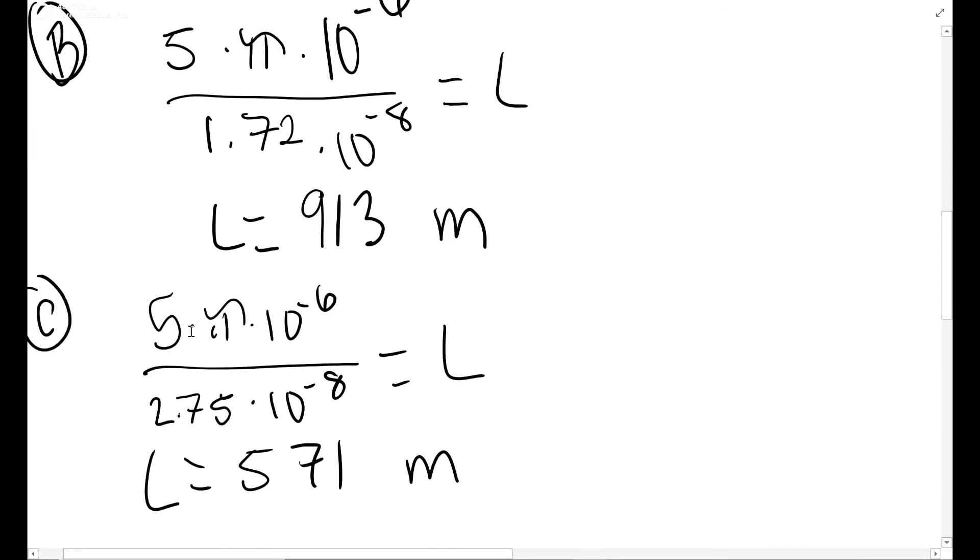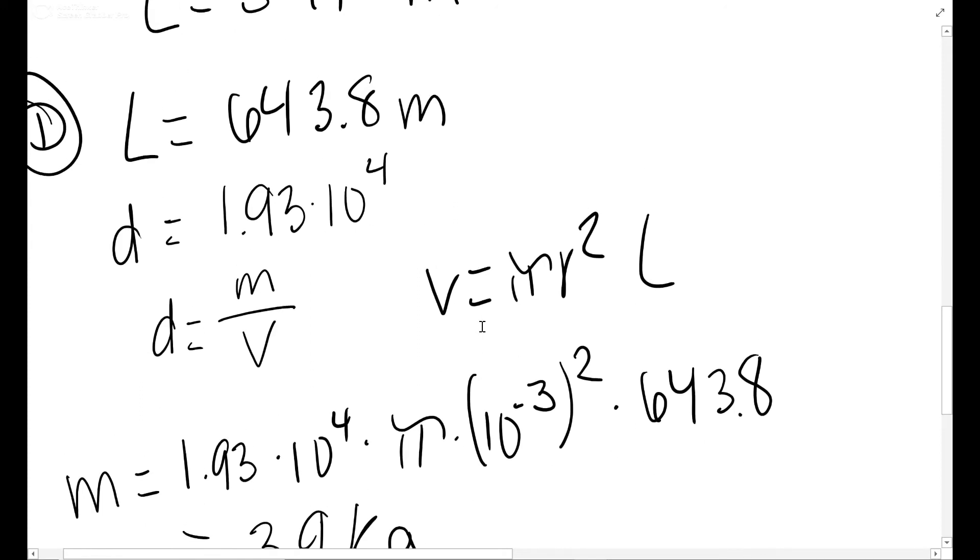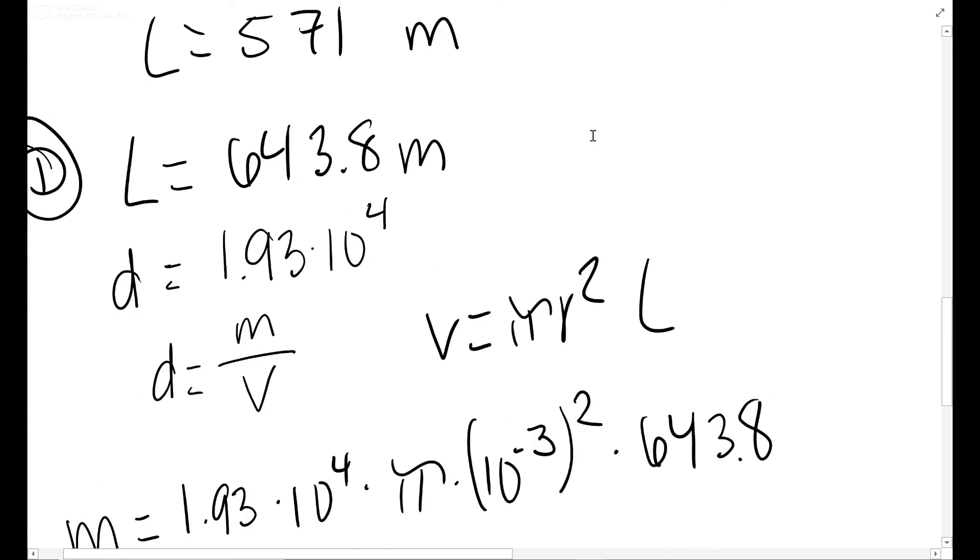For C, you're doing the exact same thing: π r² over the resistivity, little lowercase ρ, solve for L. In part D, it wants to find the mass. So you know the length from part A of the gold. It gives you the density, 1.93 × 10⁴, and you should know this equation: density equals mass over volume.